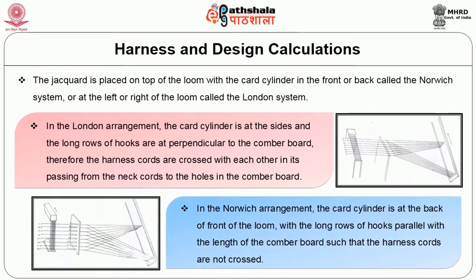Whereas in the Norwich arrangement, the card cylinder is at the back of the loom with the long row of hooks parallel with the length of the combo board. The harness cords are not crossed. In tying the harness, the first hook taken when facing the cylinder is on the right and the other hooks follow in consecutive order from 2 to 8 as indicated in figure 3.1.